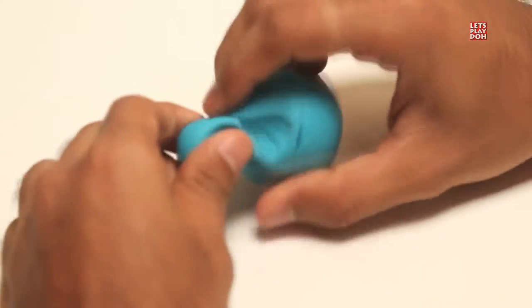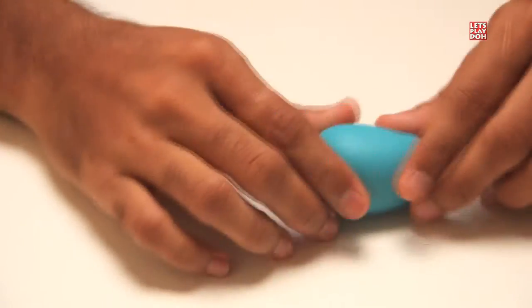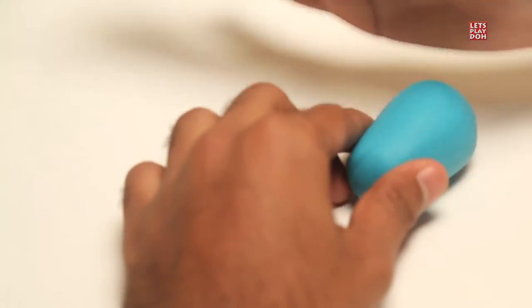Take the blue Play-Doh, a good thick amount, and then on a flat surface, use one hand and go back and forth. So you have a very thick cone. You want to put a little bit of pressure on one side, so it's thinner on one side and thicker on the other.